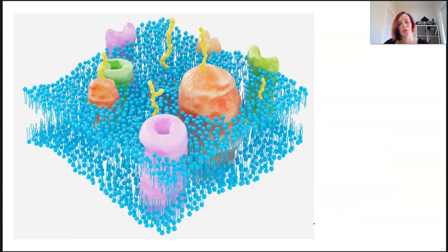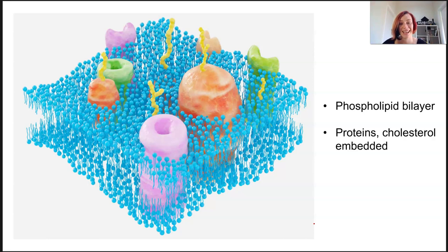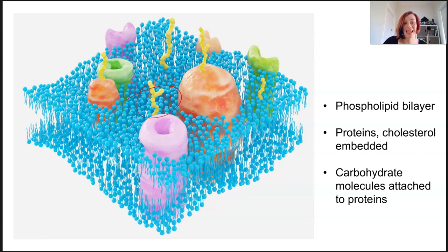The fluid mosaic model can be depicted in so many different ways, but you've got to keep remembering that this is a 3D structure. The bilayer of phospholipids is there, and the proteins are embedded in there as well as some other things like cholesterol. There's also carbohydrate molecules attached to, say, the outside of some of the protein molecules.